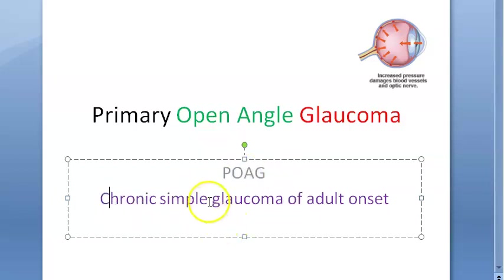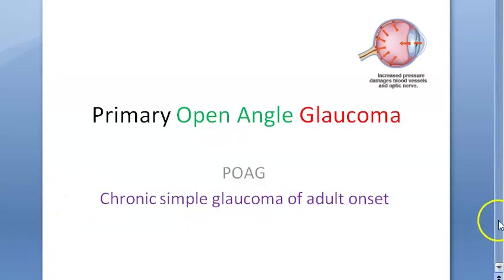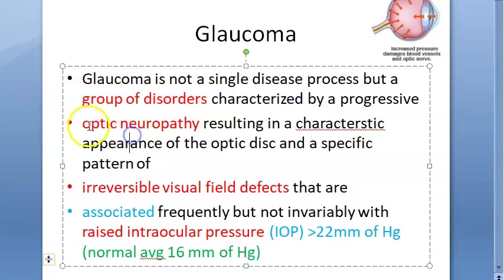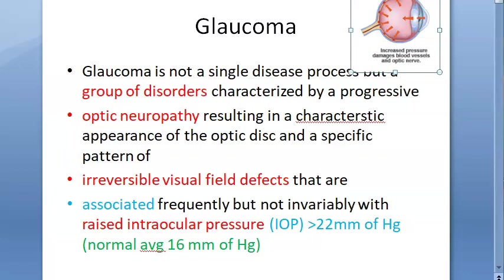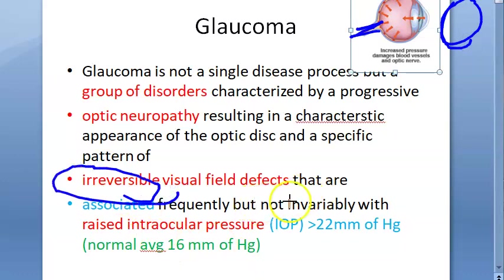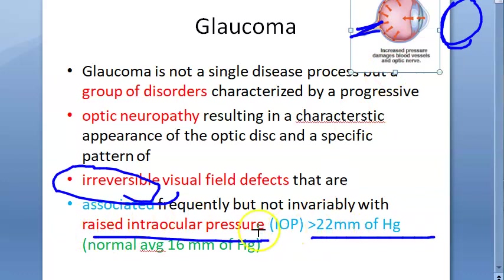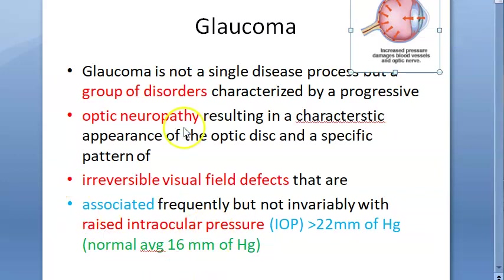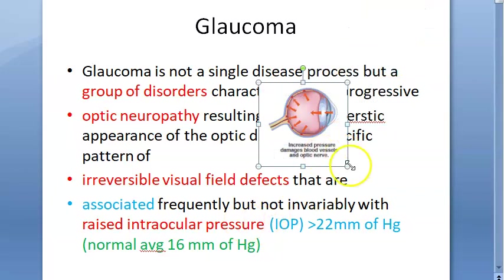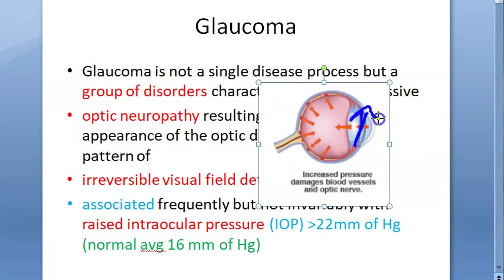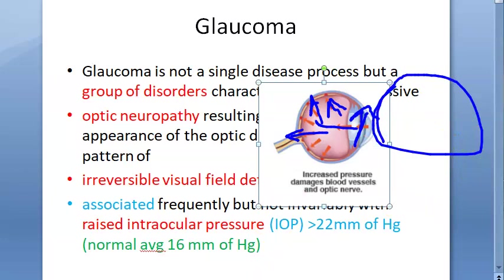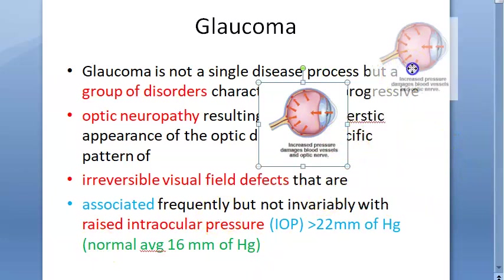POAG is also called chronic simple glaucoma of adult onset. Glaucoma is a group of disorders involving optic neuropathy — the optic nerve will be affected — and there will be irreversible visual field effects. This is usually associated with raised intraocular pressure, greater than 22 mmHg. The normal average is around 16 mmHg.